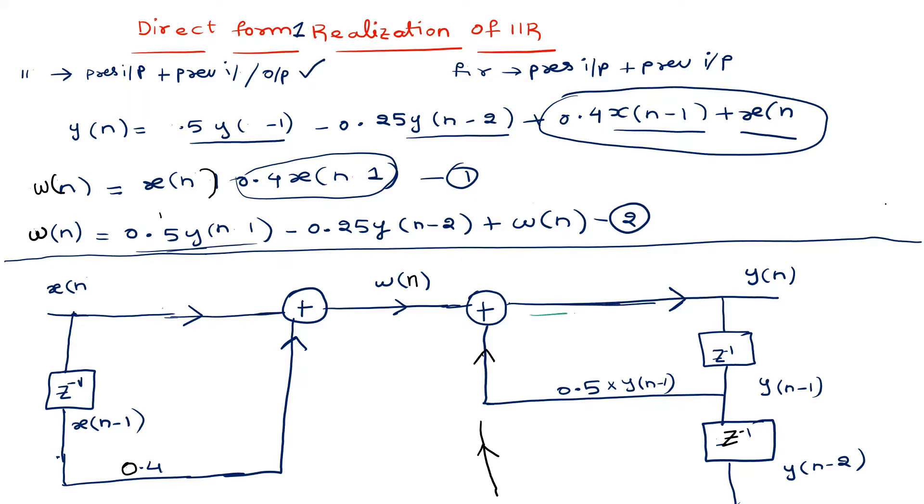If you observe carefully, at y(n) we are adding all the required components to the summer. Next we need minus 0.25 times y(n-2), so let's take this branch.